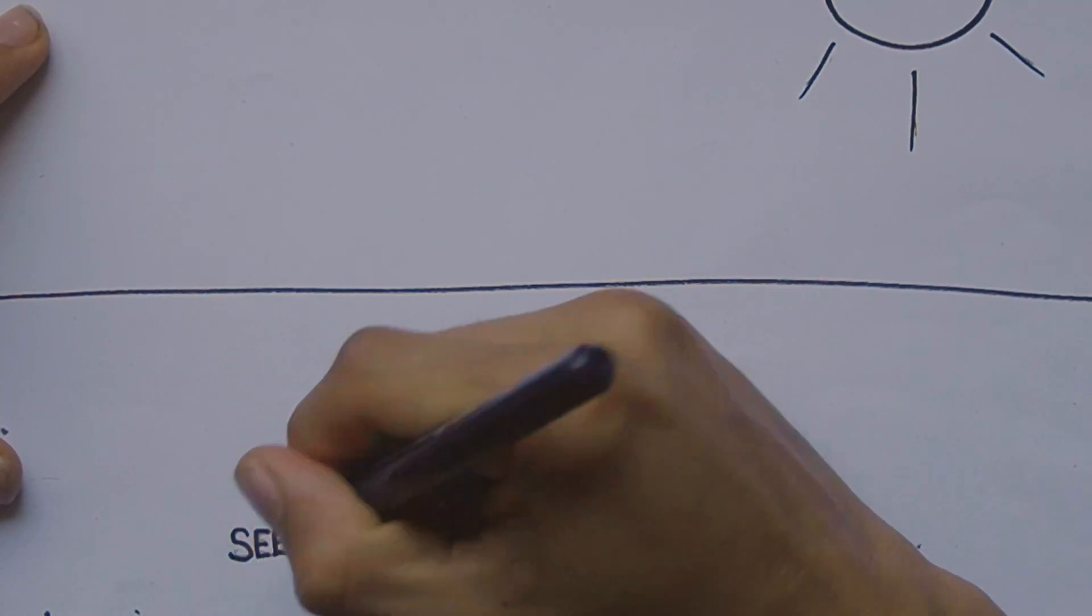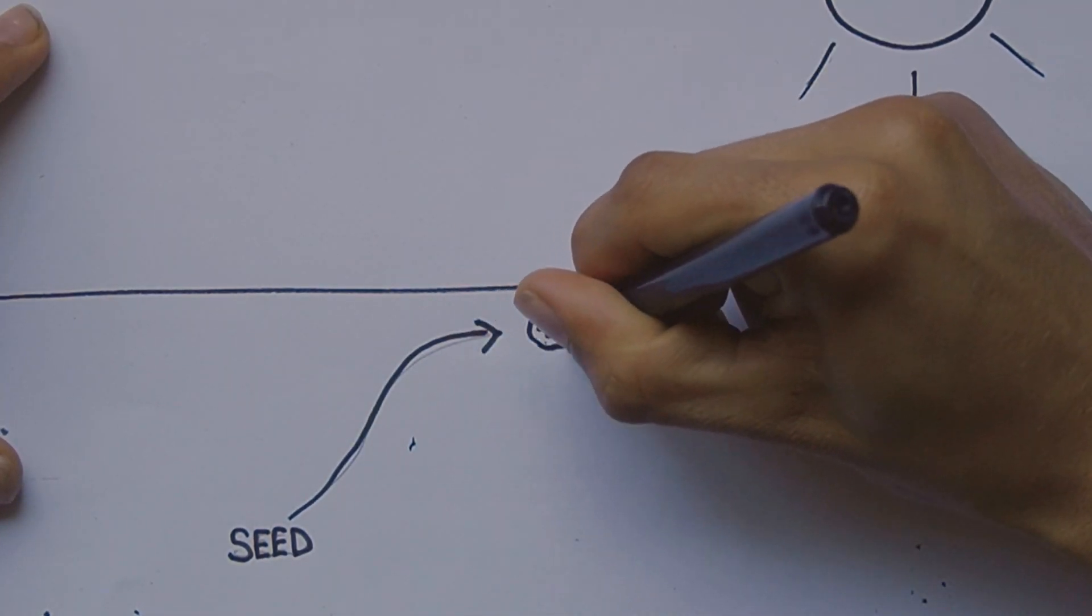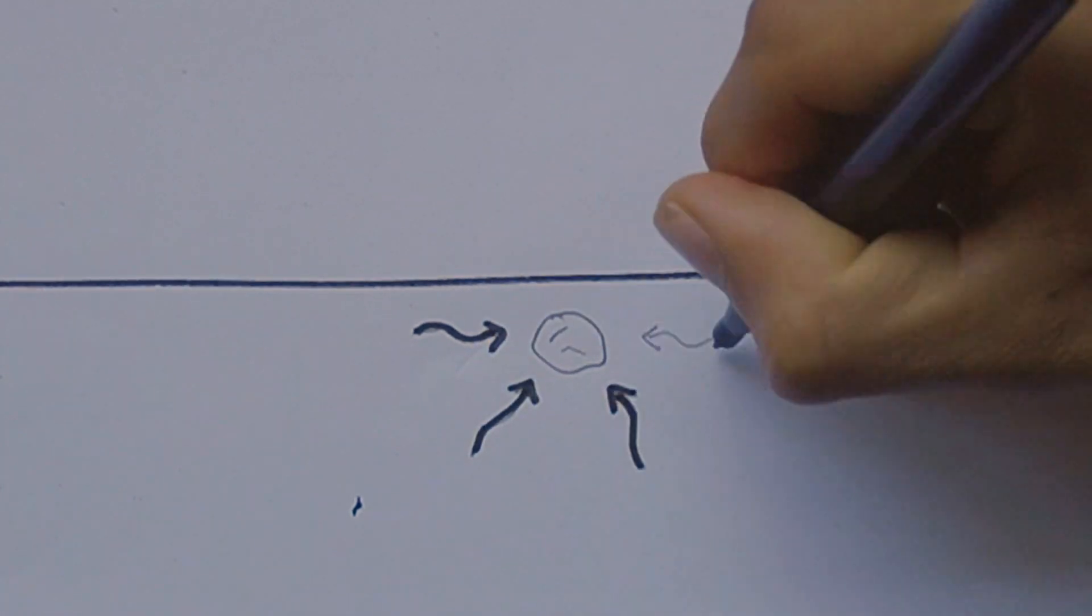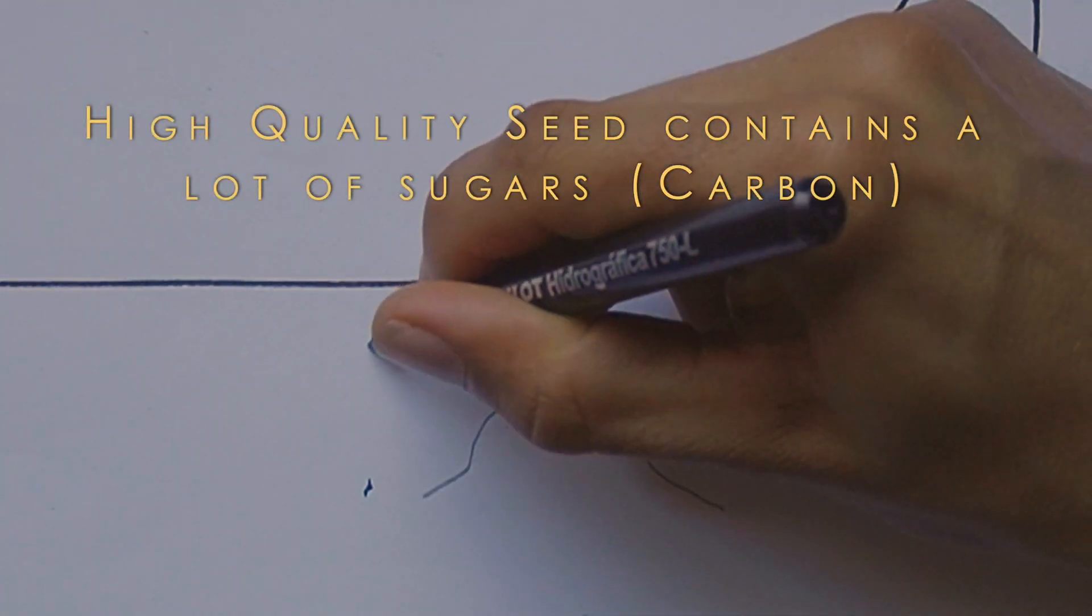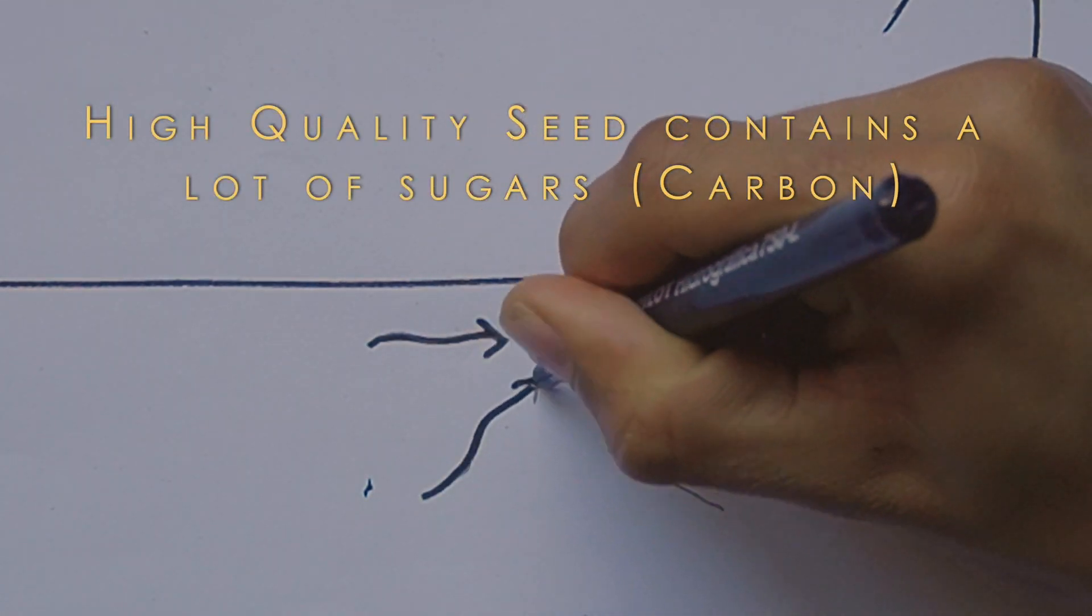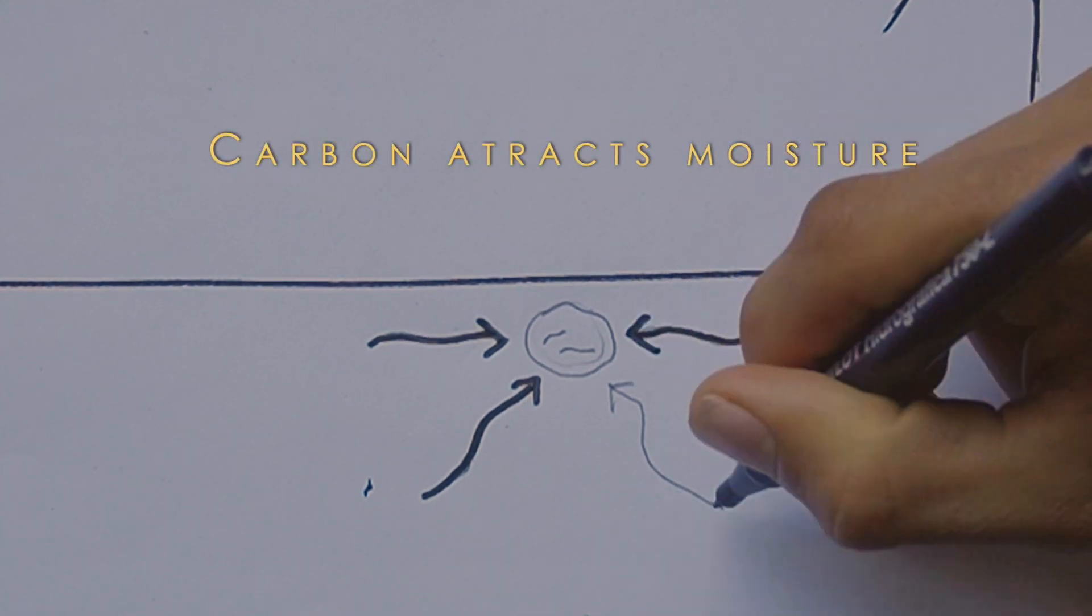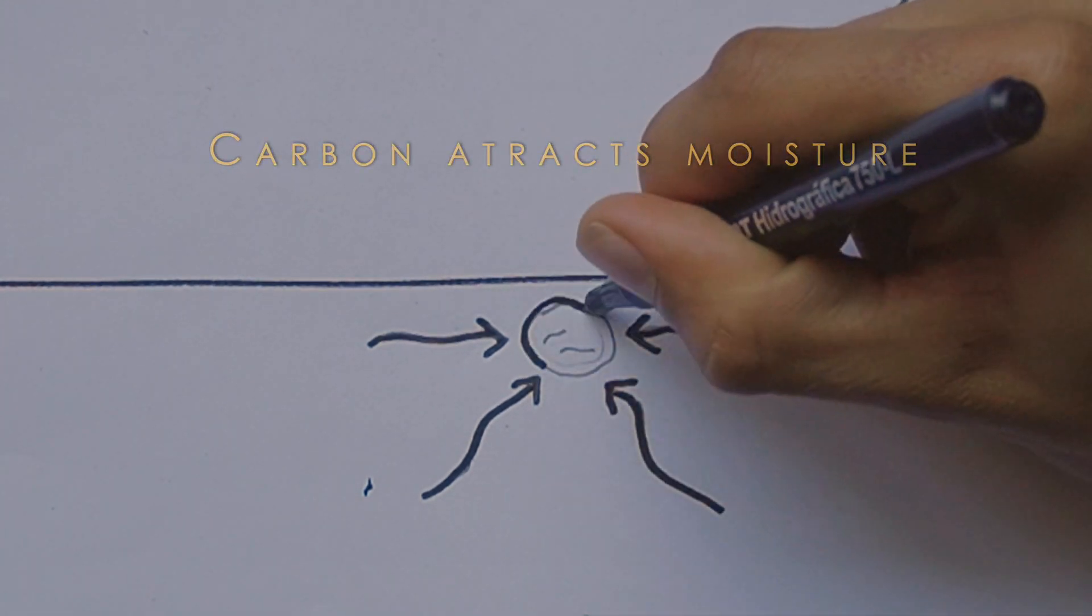The seed is planted and will immediately start attracting moisture at a rate determined by electrical current in the seed. A high-quality seed contains a lot of sugars which are made of carbon, and carbon attracts moisture. Our seed swells up.